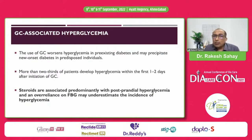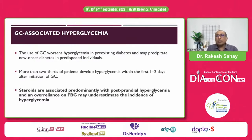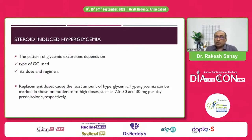More than two-thirds of patients who develop hyperglycemia develop it within one to two days of using steroids — so very soon after starting steroids. We should be vigilant about monitoring glucose levels right from the time steroids are started so we can identify hyperglycemia early; otherwise, the person is at high risk. The predominant problem is postprandial hyperglycemia, so just doing fasting glucose may underestimate the incidence.